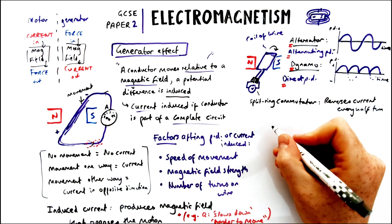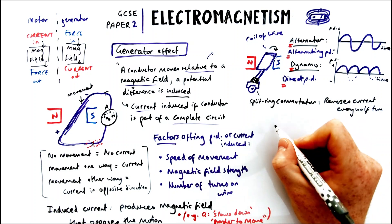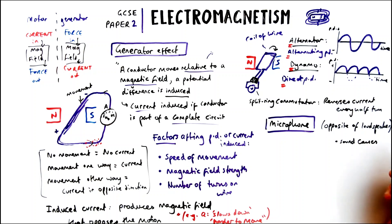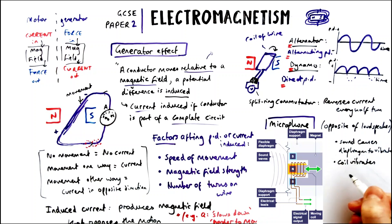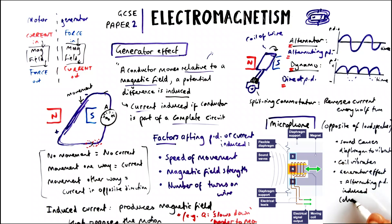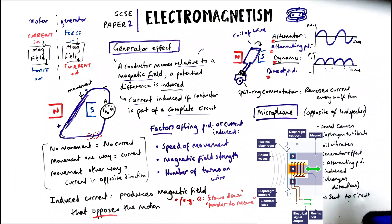One big example of the generator effect is a microphone. A microphone works in the opposite way to a loudspeaker: sound waves cause the diaphragm to vibrate and the generator effect happens because the coil is vibrating. That means there's alternating PD induced, which then gets sent to the circuit. So whereas a loudspeaker converts current to sound, a microphone converts sound waves to current.